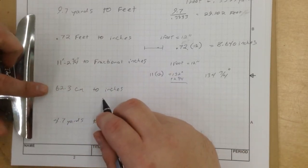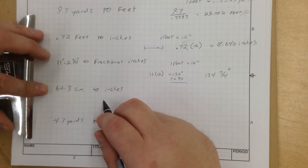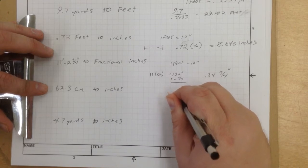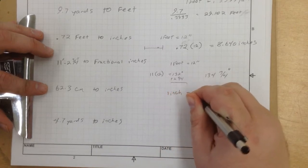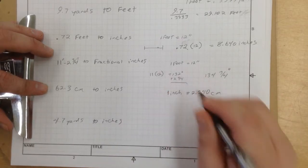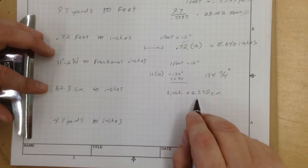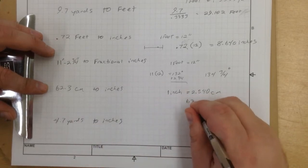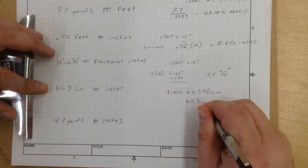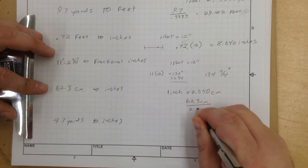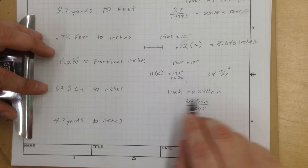Now let's check out 62.3 centimeters to inches. The key to this is 1 inch is equal to 2.540 centimeters. So that's your equivalency. That's your key. That's your cipher. So the easiest thing to do, 62.3 centimeters divided by 2.540.